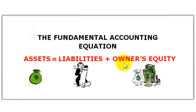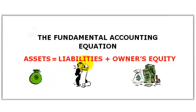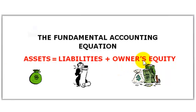One other way you can talk about it is: if I own an asset, for example a house that's $100,000, and I have a mortgage on it for $50,000, that means what I'm left with — the equity the owner has in that house — is $50,000.